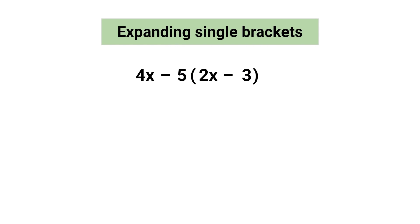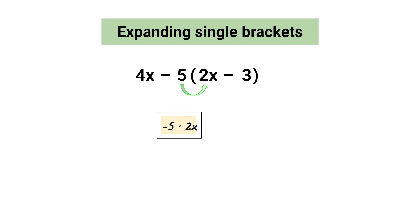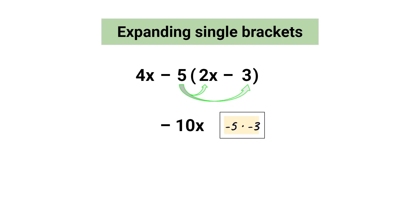Let's try another one. Notice there's an additional term 4x in this expression, but what's most important is that you expand first. So let's multiply the term outside the brackets by the terms inside. First, it's important to consider the operation to the left of a term when carrying out calculations — so this is negative 5 multiplied by 2x, which equals negative 10x. Next, negative 5 multiplied by negative 3 equals positive 15.